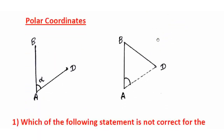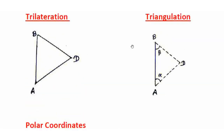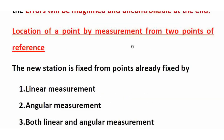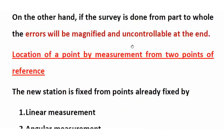Next is polar coordinates — this is the traversing method. A and B are reference points. We measure the angle and the distance A to D. There are two types of traversing: we measure the angle and the length. This is a polar coordinate system. Traversing is used to fix a position. These are the three methods: linear measurement, angular measurement, and both linear and angular measurement. We fix the location of a point by measurement from two points of reference.